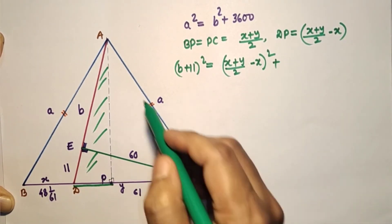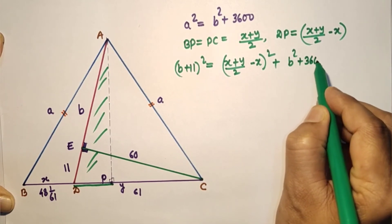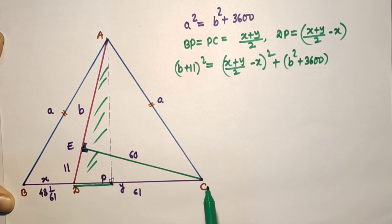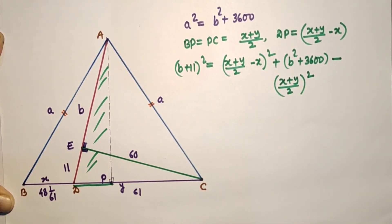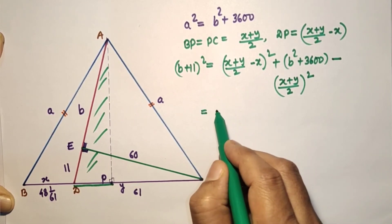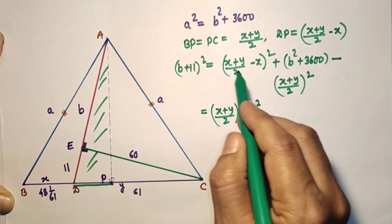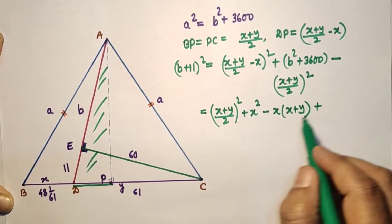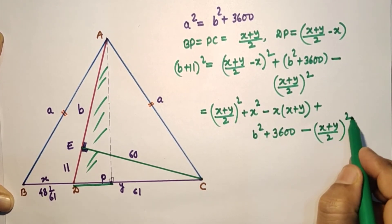h² = a² − PC² = (b² + 3600) − (x + y)/2)². Expanding DP²: [(x + y)/2 − x]² = (x + y)²/4 + x² − x(x + y), and the 2s cancel. So (b + 11)² = (x + y)²/4 + x² − x(x + y) + b² + 3600 − (x + y)²/4. The (x + y)²/4 and x² terms cancel.